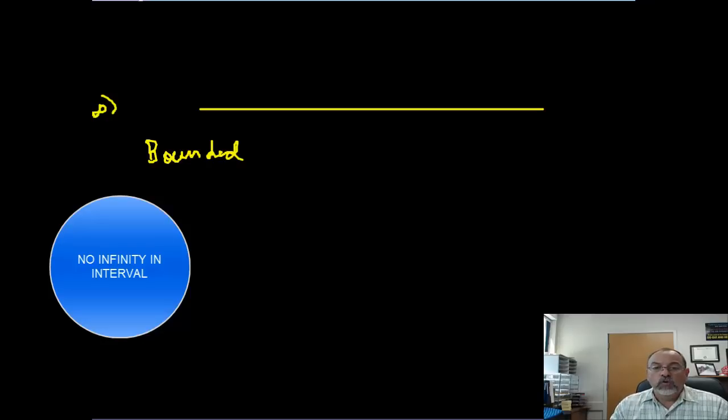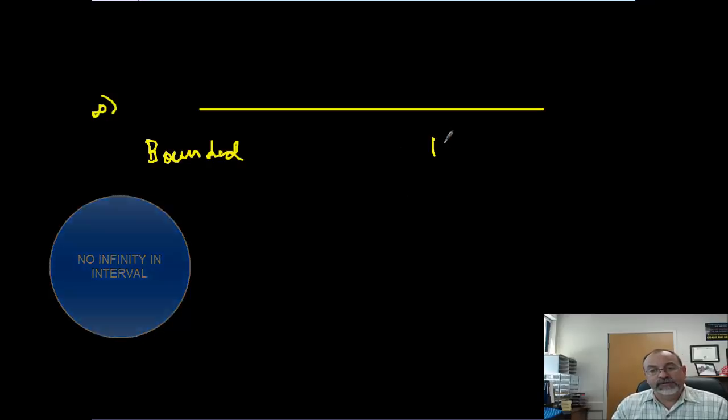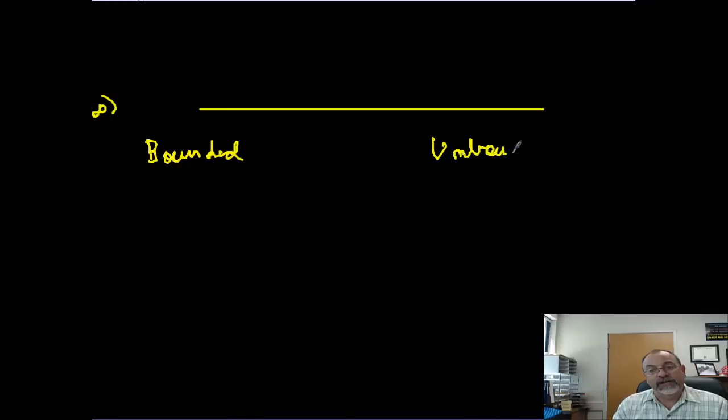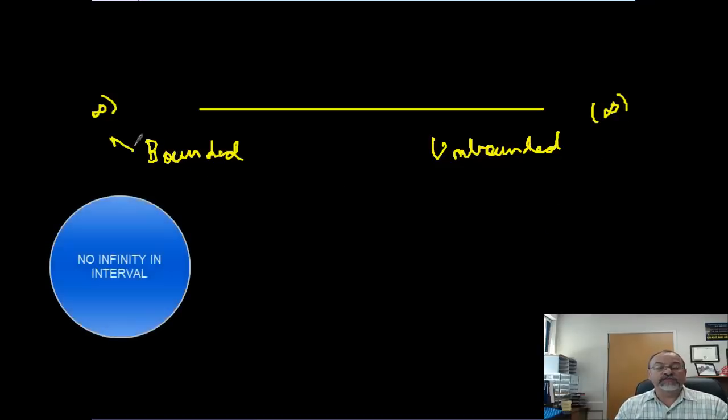Well then, that seems to bring on the next one and the next question. The other type of interval are unbounded. So what do you think is true about unbounded intervals? That means there must be infinity in either the left or the right side of the interval. So bounded interval means no infinity is involved.